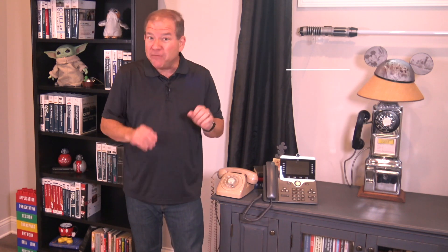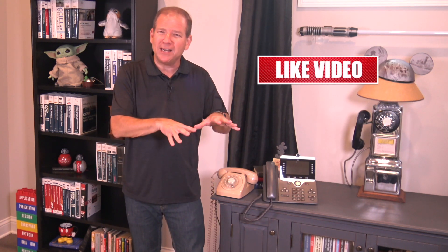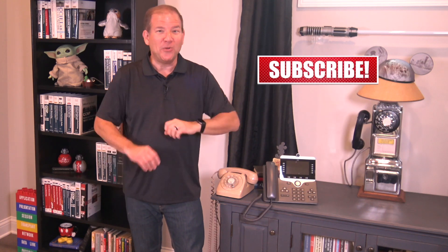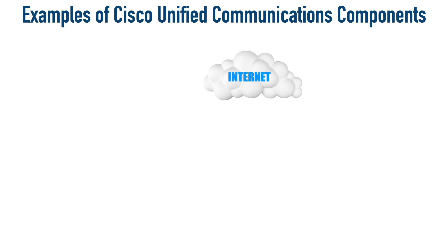And as always, if you enjoyed today's video, please give me a like down below and subscribe so you don't miss any of our weekly content. Now let's take a high-level overview of some of the players that make up a Cisco Unified Communications network. Let's look at some of the devices we might find in an Enterprise Unified Communications network — this is not going to be a comprehensive listing, but these are the ones specifically you need to know for the CL Core exam.